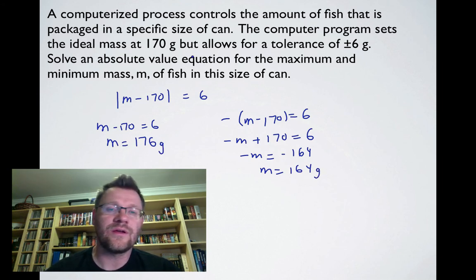We get two answers: 176 and 164, the two we instinctively know we should get—one that is 6 grams over and one that is 6 grams under. We can write these as an absolute value equation with the ± on the right side and the absolute value of your variable minus the target value on the left.